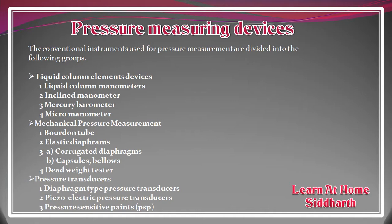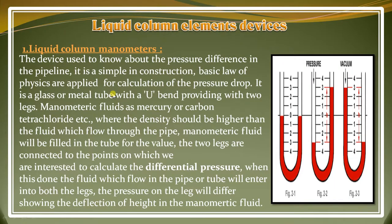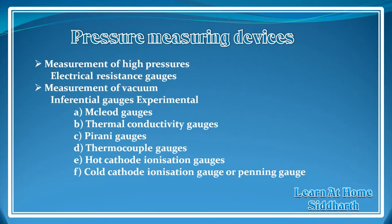The pressure measurement devices are numerous and it is a vast field, so I have divided the pressure measurement chapter into five different parts. Today we are going to understand the first part: liquid column element devices, which includes liquid column manometers, inclined manometers, mercury barometer, and micromanometer. The other four parts — mechanical pressure measurement, pressure transducers, measurement of high pressure, and measurement of vacuum — will be discussed in the next lectures.